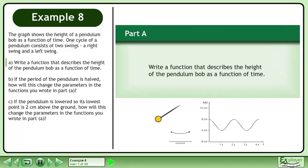The graph shows the height of a pendulum bob as a function of time. One cycle of a pendulum consists of two swings: a right swing and a left swing. In Part A, write a function that describes the height of the pendulum bob as a function of time.